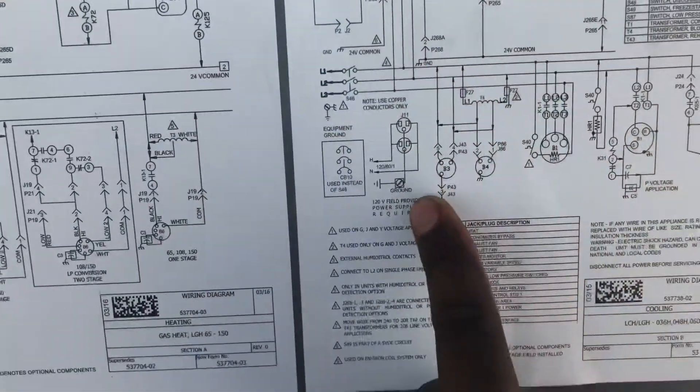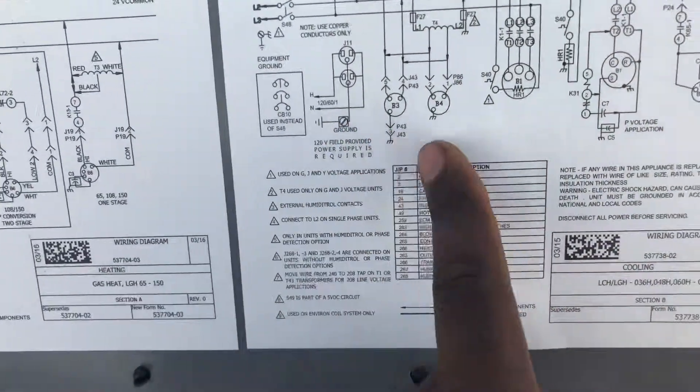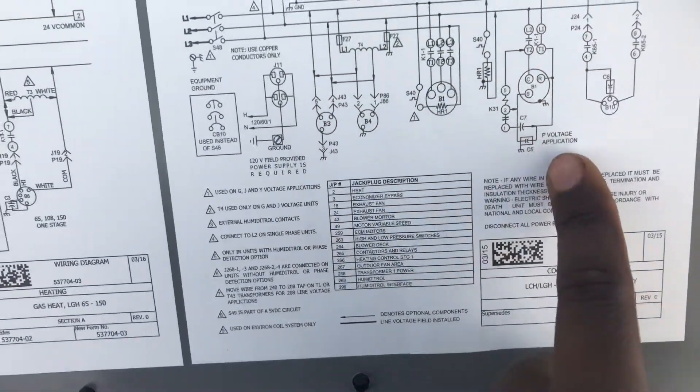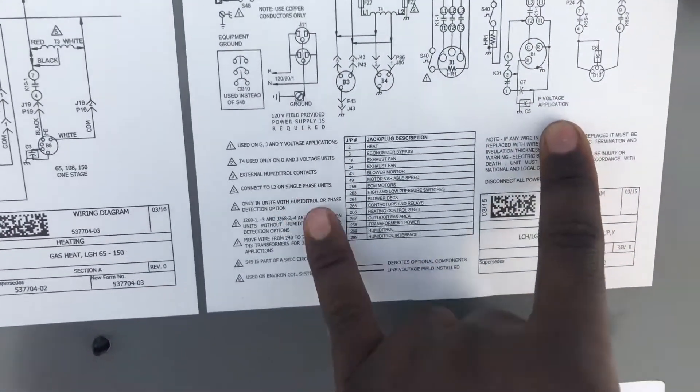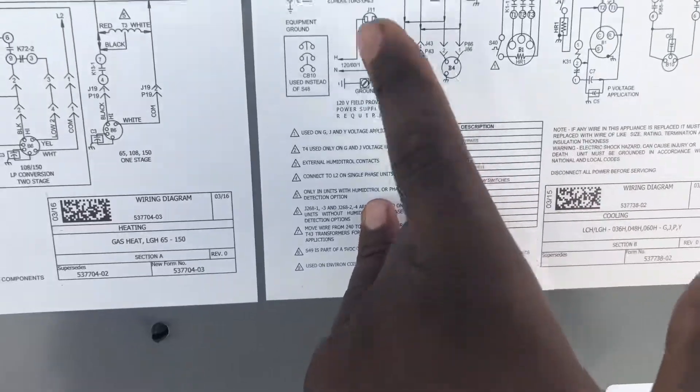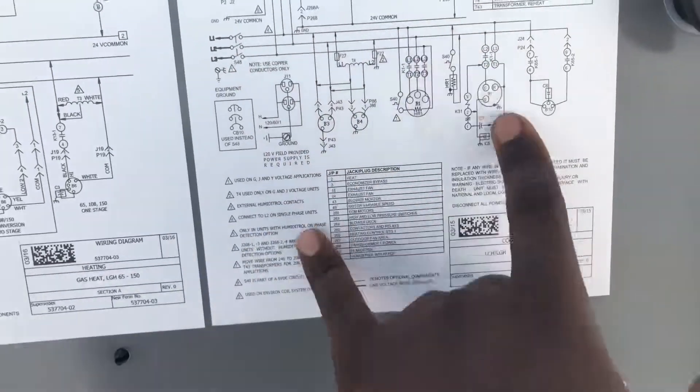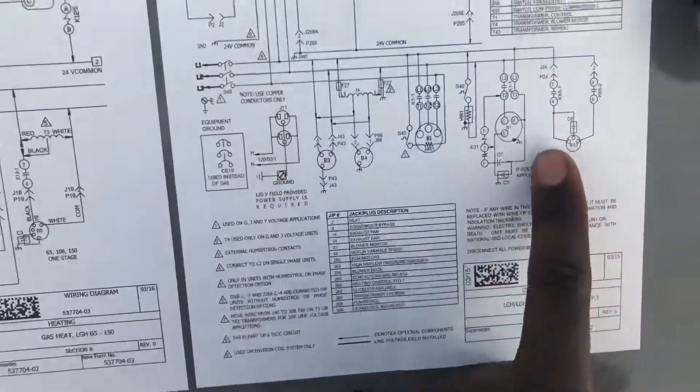To be honest, if you don't know where your freeze stat switch is, it'll show you right here. All these little numbers are indications of switches and contacts — there's relays and all that good stuff, which is all right here in the key.